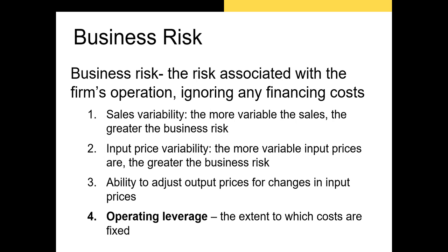The first factor that determines the ratio of debt and equity a firm chooses is business risk. Business risk can be thought of as a subset of firm-specific risk. It refers to the risk associated with the firm's operations, ignoring any financing costs — factors that affect net operating income like changes in demand or the price at which a firm sells its products.